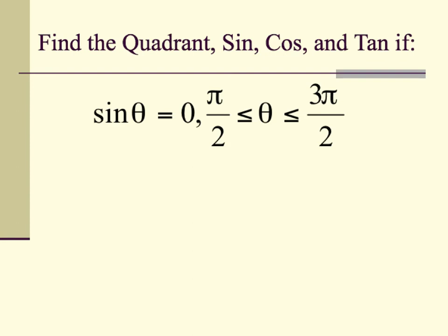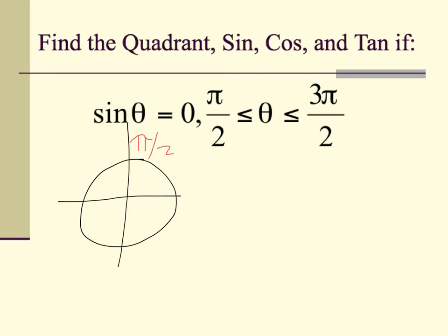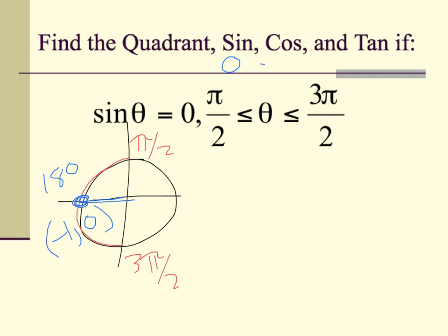This is a trick question. We know the sine equals 0 and the angle is between pi over 2 and 3 pi over 2, placing us in either the second or third quadrant. The only place in that range where sine equals 0 is at 180 degrees. We can't draw a triangle for something on the x-axis — we simply have a straight line. Our point is negative 1, 0. The sine is 0, the cosine is negative 1, and the tangent is y over x, which is 0.